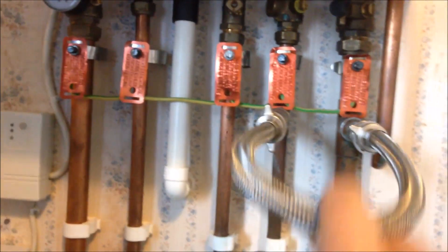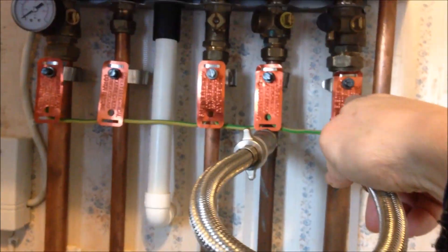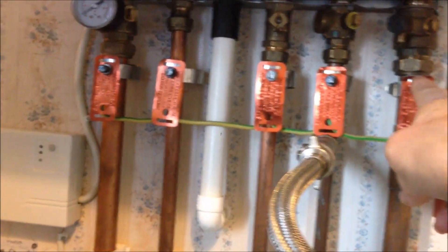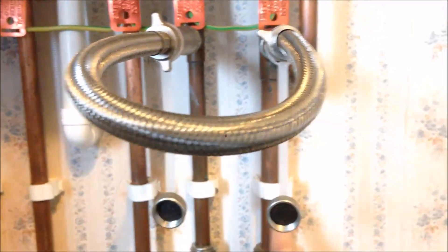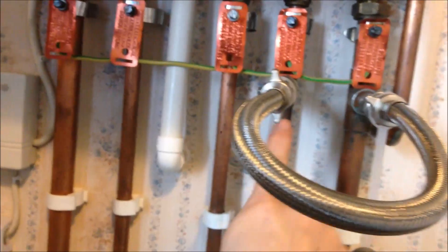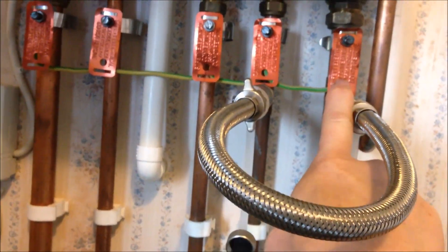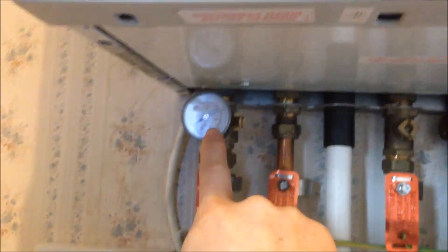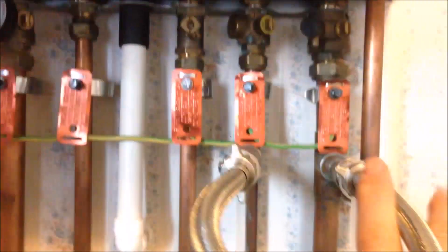And also, this flexible pipe connected here, this is for the central heating back pipe. Central heating water will go out from there and come back from here. So we have incoming water, and with this pipe going into the central heating system. So this pressure meter indicates the pressure in the central heating circuit.